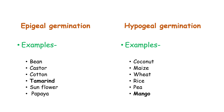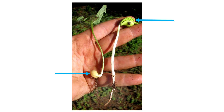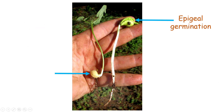Mango is a very common example of hypogeal germination. In this picture, this seedling shows epigeal germination and this seedling shows hypogeal germination. This brings us to the end of this video.